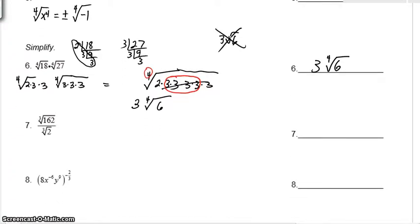As we take a look at number 7, before you do anything, you could very well just turn this into one radical. Turn it into the third root of 162 divided by 2. And very quickly, with a calculator just in your head, you can see that we've got the cube root of 81.